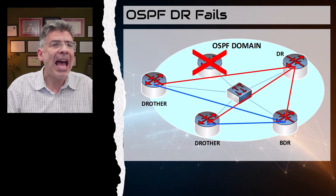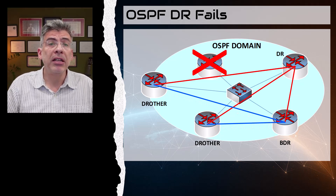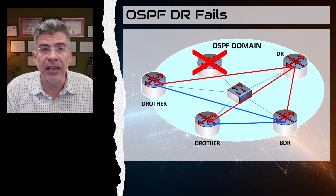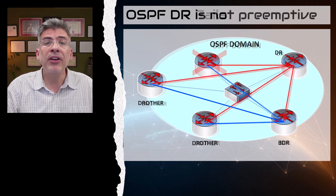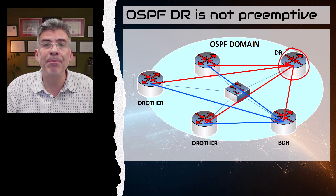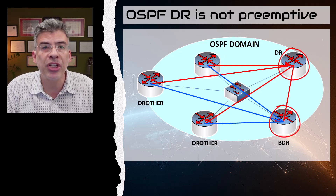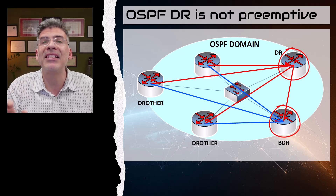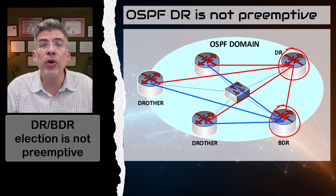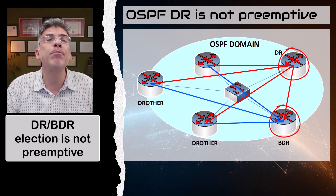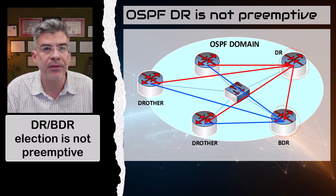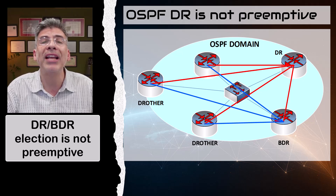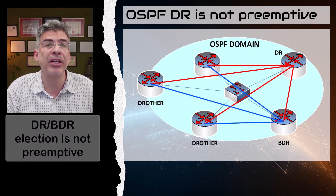What happens if the old DR comes back up? The simple answer: absolutely nothing. If there is a functioning DR and BDR on the OSPF topology, the choice of these roles remains stable. In other words, the choice of DR and BDR is not preemptive. This is done by design to maintain stability and avoid unnecessary churn.